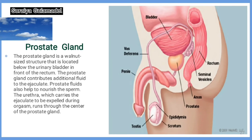Prostate gland. The prostate gland is a walnut-sized structure that is located below the urinary bladder in front of the rectum. The prostate gland contributes additional fluid to the ejaculate. Prostate fluid also helps to nourish the sperm. The urethra, which carries the ejaculate to be expelled during orgasm, runs through the center of the prostate gland.